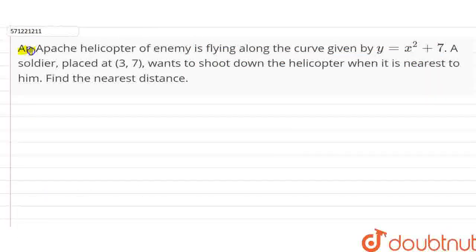The question says that an Apache helicopter of enemy is flying along the curve of equation y equals x square plus 7. A soldier placed at (3,7) wants to shoot down this helicopter which is flying along the curve y equals x square plus 7 when it is nearest to him.